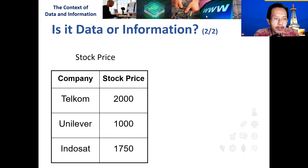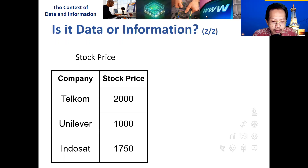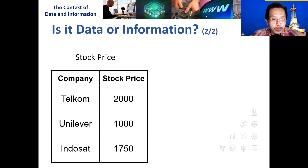It now depends on whether it's useful or not. If this were shown to an elementary school student and that student were asked which is the highest number among the three, they'd say it's 2,000 — that's the highest, the lowest is 1,000, and 1,750 is lower than 2,000. So for that elementary school student, this is information, because it's useful. But for us as students, and even more for stockbrokers, it's not information — it's just data.